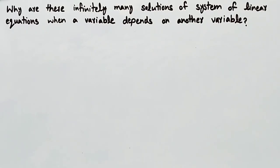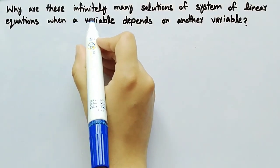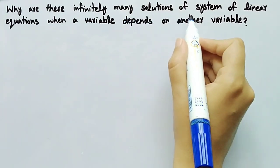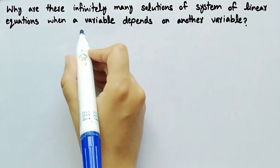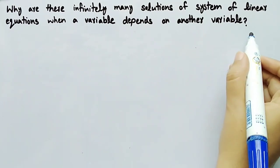In this video, we'll see why are there infinitely many solutions of system of linear equations when a variable depends on another variable.